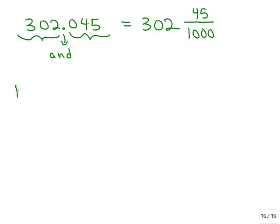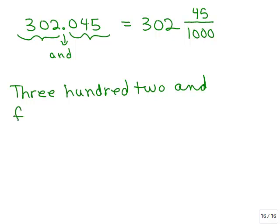And then if you wanted to write this out in words, it's 302. Don't write 300 and 2. Just 302, and is what separates the whole number part from the fractional part, and 45 thousandths. So now you know how to write decimals in fractional form and to also write them in words.